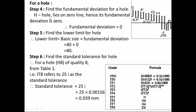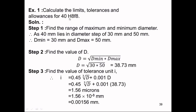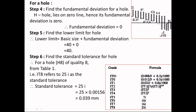Next step: find the fundamental deviation. Which type of hole is it? It is an H-type hole, as shown in the diagram. If you observe, the H hole just lies on the zero line. The fundamental deviation — which is the shortest distance from the zero line — is obviously zero. So the fundamental deviation for an H hole is zero. Lower deviation equals fundamental deviation for an H hole. The lower limit of the hole will be nothing but the basic size of 40 mm plus zero, giving 40 mm.